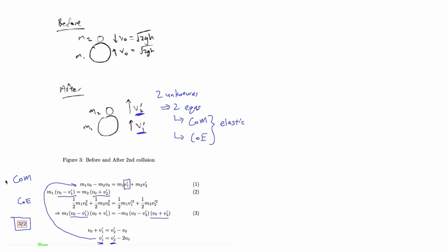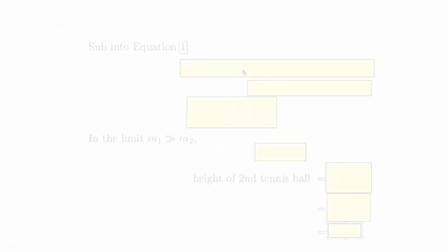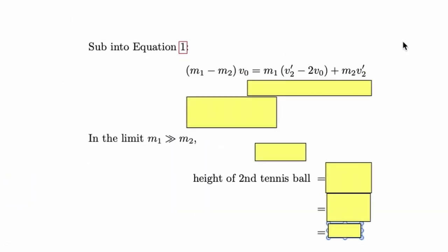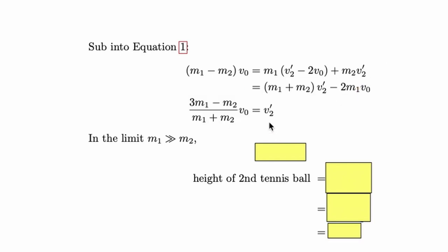Effectively, we have simultaneously solved the COM and COE equation. That substitution yields this equation which basically allows us to express v2' in terms of v0. We have solved for v2'.